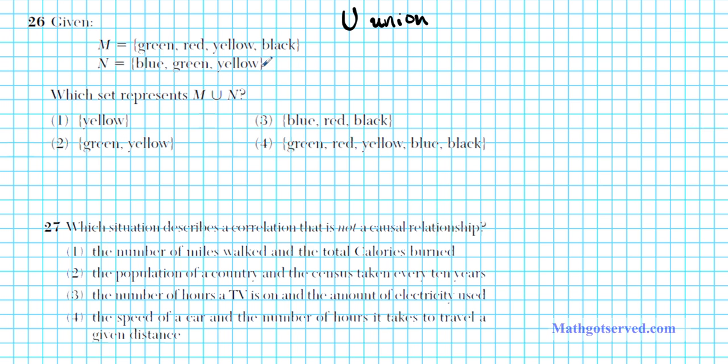What we're being asked to do right here is to unite these two sets. So let's go ahead and do that. Set M is green, red, yellow, and black. And then set N has elements blue, yellow, and green.